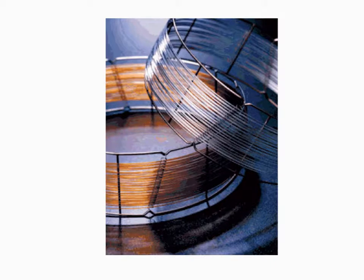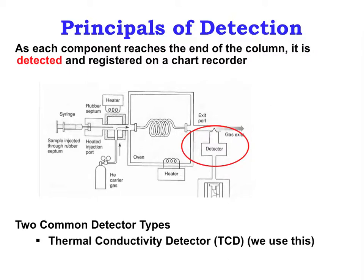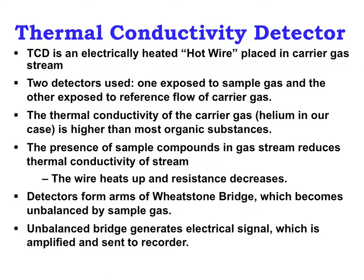Here are some real capillary columns. As the components elute from the column, their presence must be detected in order for us to get any useful information. This is done by the detector, which is located at the end of the column. There are two common detector types. The thermal conductivity detector is the type found on our instruments. We will also talk a little about the flame ionization detector. A TCD uses changes in electrical resistance to detect when a component exits the column. The sample is not destroyed when using a TCD.